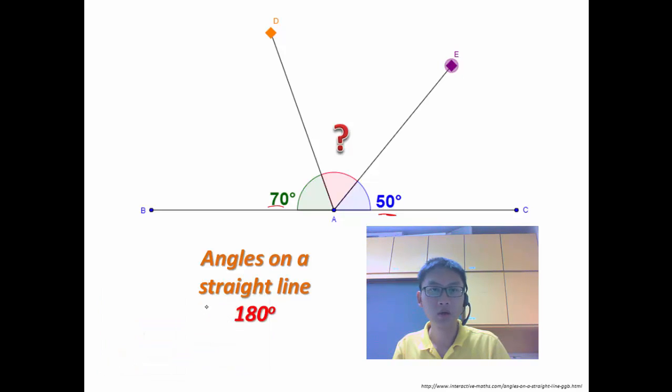what you need to recall is the angles on the straight line is 180 degrees. So because of that, if this is 70, this is 50, I can find the unknown. So all I have to do is take 180 degrees minus 70 minus 50 degrees.